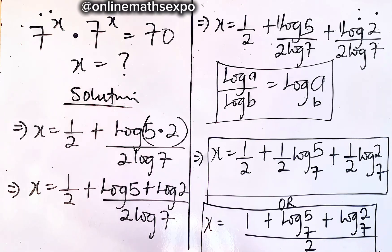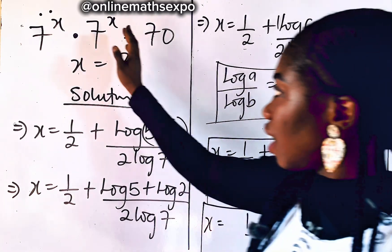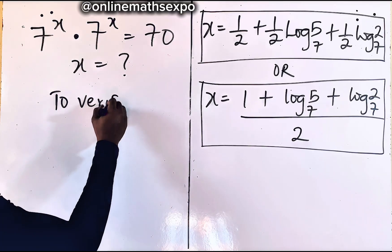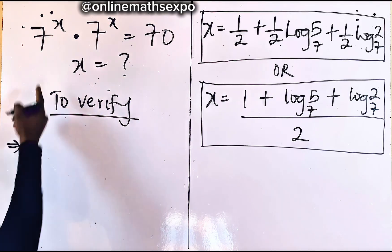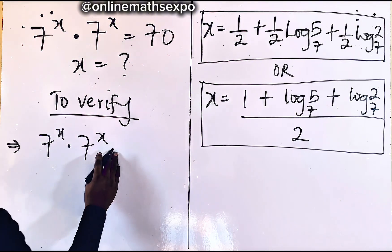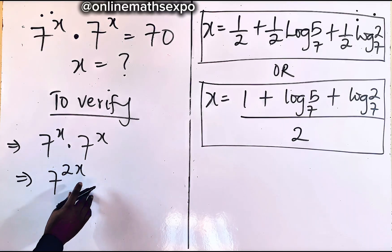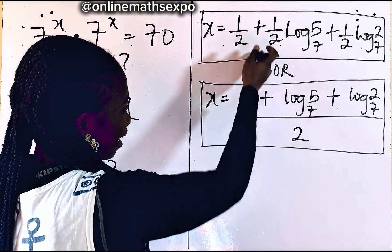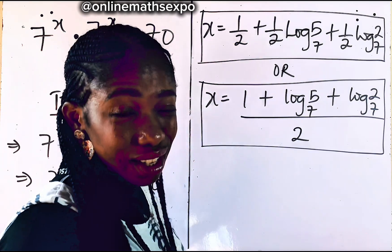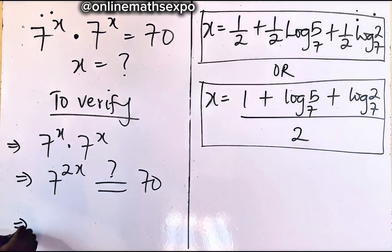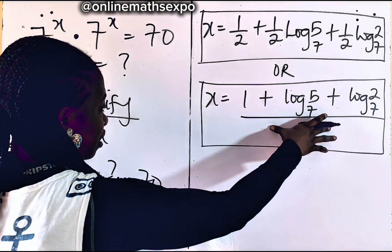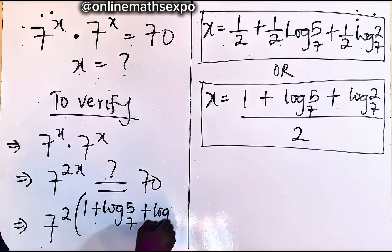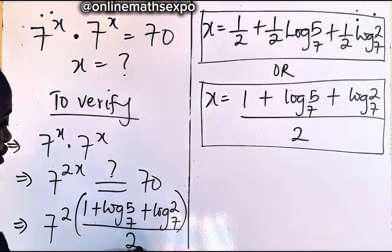Now at this point we are going to do a check — plug this x value on the left side to see if it gives us 70. To verify, we start from 7 to the power of x multiplied by 7 to the power of x, which gave us 7 to the power of 2x. We want to know if this equals 70 when we plug in our x value. We'll use the form x equals 1 plus log 5 base 7 plus log 2 base 7, all divided by 2. So we have 7 to the power of 2 times that expression.